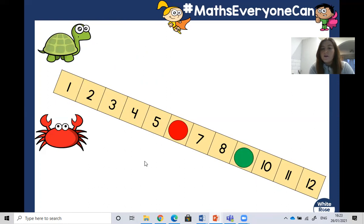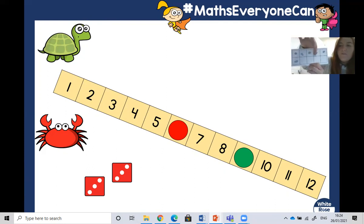That'll be the crab's turn now. Roll the dice. What numbers are on the dice? Shout them out for me. I've got three on one and three on the other side. I'm going to put three more on. There you go. How many have I got? Let's count them. One, two, three, four, five and six.